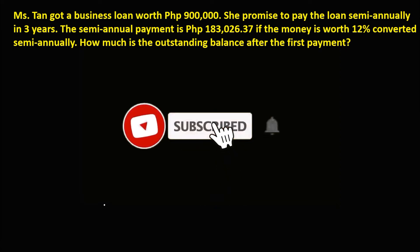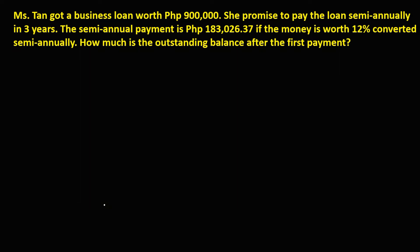Welcome to MathStorya. Miss Tan got a business loan worth 900,000 pesos. She promised to pay the loan semi-annually in 3 years, and the semi-annual payment is 183,026.37 pesos if the money is worth 12% converted semi-annually. So how much is the outstanding balance after the first payment?